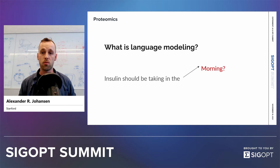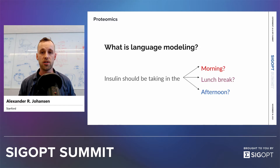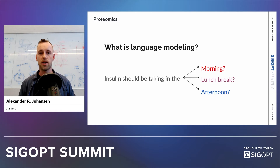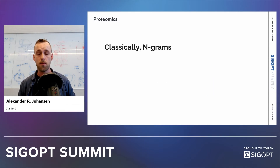You could say it should be taken in the morning, or in the lunch break or afternoon. You could also have other words — you could have the whole English vocabulary. So language modeling is calculating a distribution over what the next word should be.